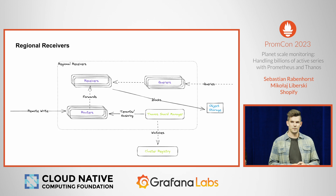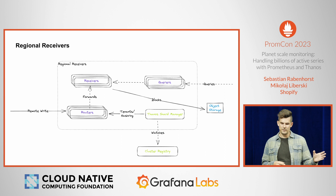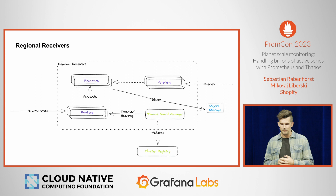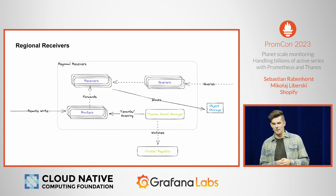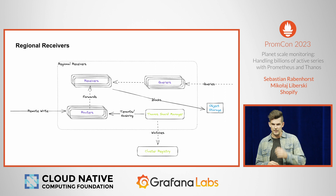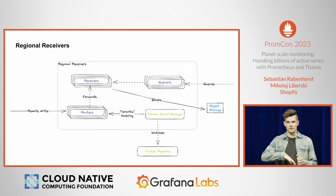In Shopify we have multiple big regions, and we decided to have one receiver deployment per region. Why do we do this? First, no single point of failure — if one region goes down, other regions still keep working. We can use internal regional networking for remote write, because all the client clusters are in the same network, giving low ingestion latency, overall fewer networking issues, and we also don't need to pay for egress and ingress traffic.